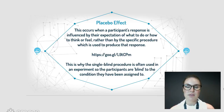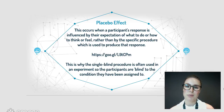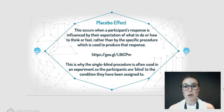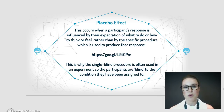In experiments, to counteract the placebo effect, something called a single blind procedure is used. This is where the participants are blind to the condition they've been assigned to. For example, as an undergrad psychology student taking part in studies, you wouldn't know if you were in the control group or the experimental group — you'd just walk in, the experiment would happen, and then afterwards they'd tell you a little bit about it.